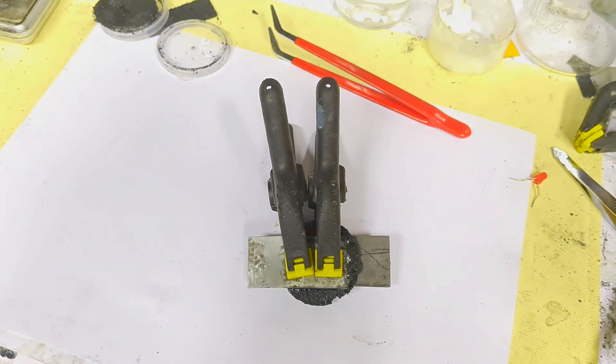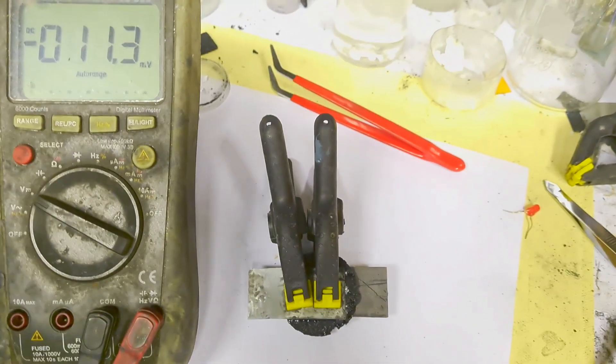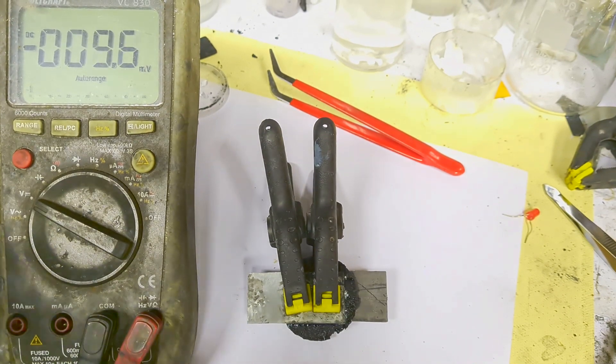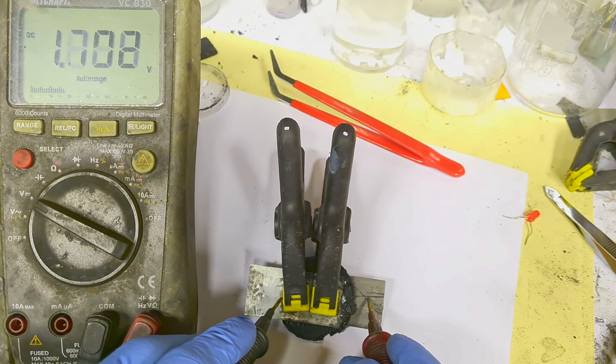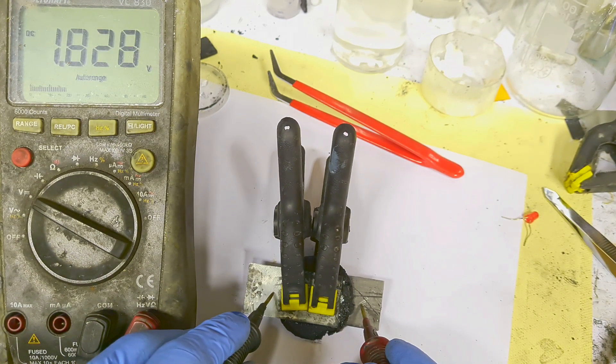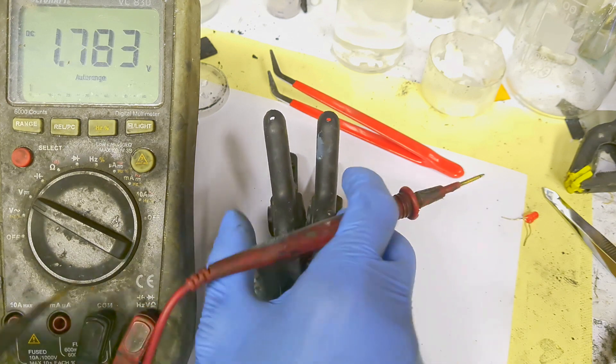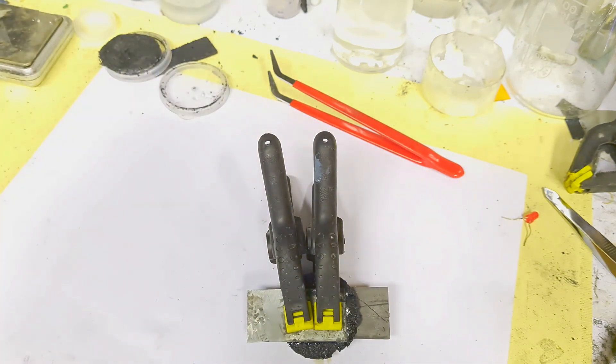So let's check the voltage. And the voltage is the voltage of a zinc bromide battery, which is 1.8 volts.